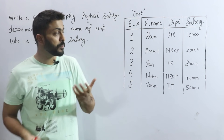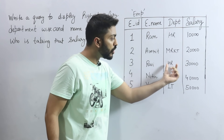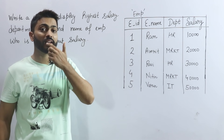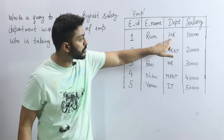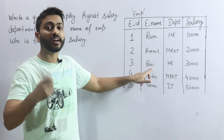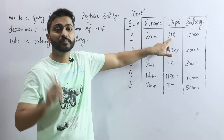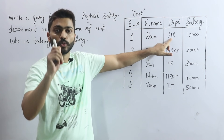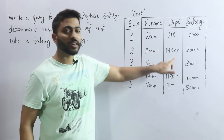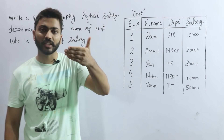The next level is department-wise. So in this employee table, employees work in different departments. For example, in the HR department there are Ram and Ravi. Within the HR department, which employee earns the highest salary? Similarly, in the marketing department, which employee earns the highest salary — we need to find that department-wise.